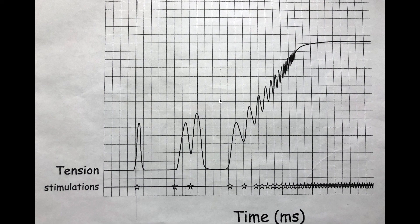On the last graph, we saw motor unit summation — that graph increased because we had more motor units recruited by higher voltages. Here, all stimulations are the same voltage — we chose three volts the whole way through. Three volts, three volts, three volts. The only thing that's different is how quickly we are sending three volts to that muscle.